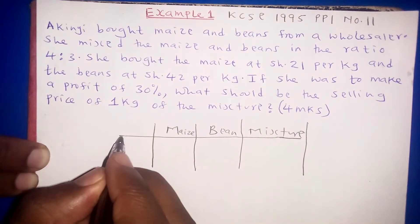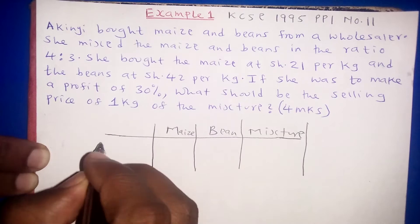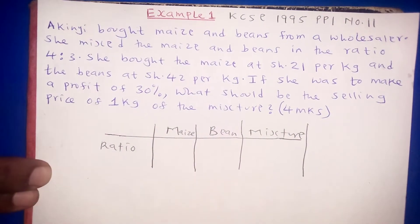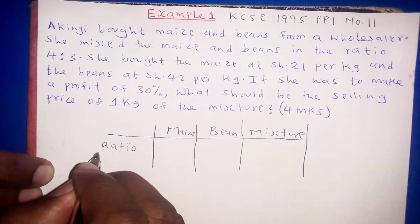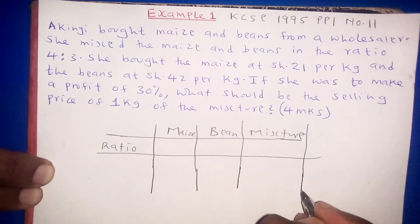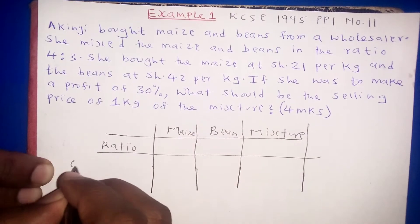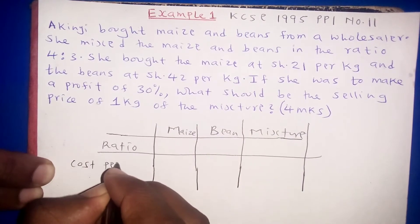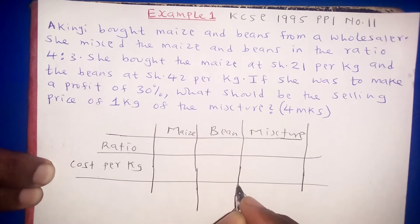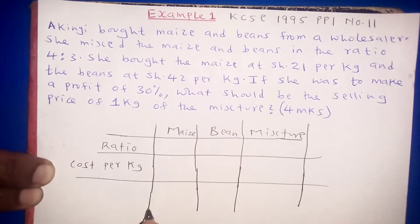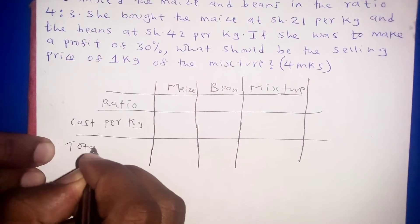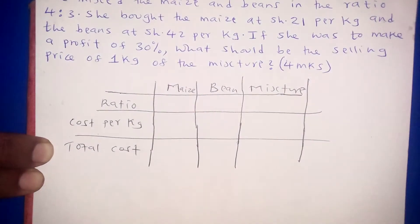The first value we indicate in the table is usually the ratio, depending on the specifications of the question. After that we come to the cost per kg, and lastly what we call the total cost involved.